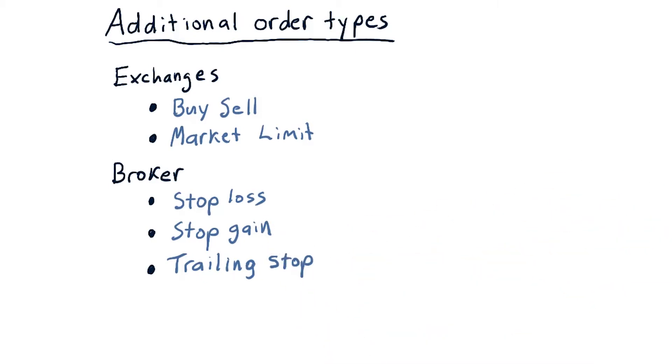So here are some examples. Stop loss is a kind of order where you say, when the stock drops to a certain price, I want you to sell it.